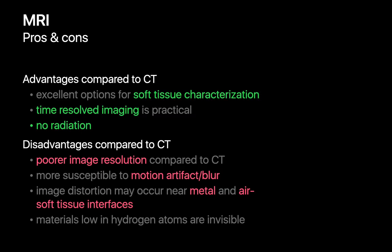Let's review the advantages and disadvantages of MR imaging compared to CT. Some of MRI's advantages are its ability to provide much richer characterization of soft tissue than CT, its ability to capture motion with time-resolved imaging, and the absence of ionizing radiation, which can be of particular concern for younger patients.